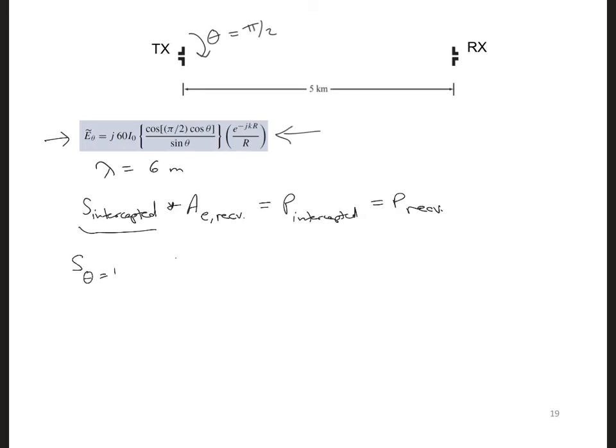So I can say S at theta equals pi over 2 at distance r is E at theta equals pi over 2, the magnitude squared, over 2 eta naught, since we're in free space. So for free space, eta naught is 377 ohms, r here is 5 kilometers, and since the transmitting antenna is lossless, the efficiency is going to be equal to 1.